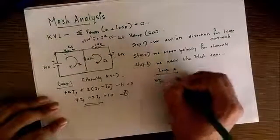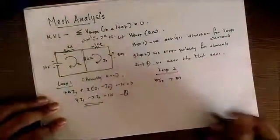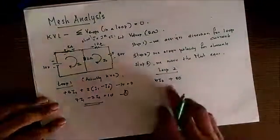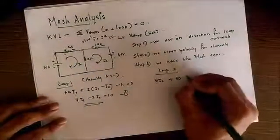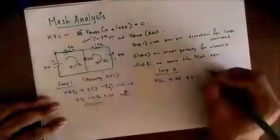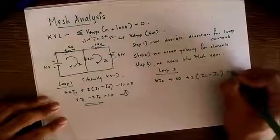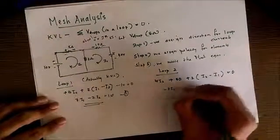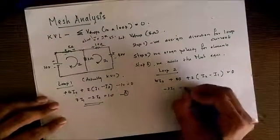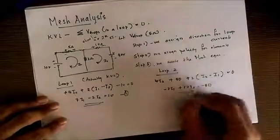Now loop 2: similarly we write the equation. 10*I2 plus 50. Here the positive sign is encountered first. If we encounter the positive sign first, put positive, otherwise put negative. Now plus 2 into I2 minus I1 equal to 0.